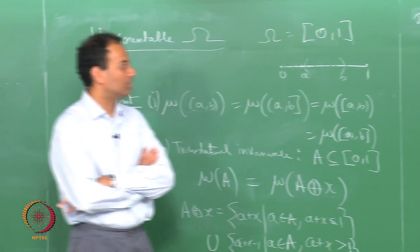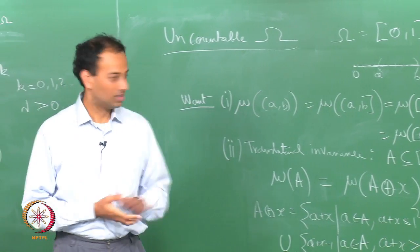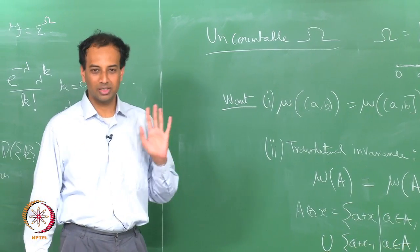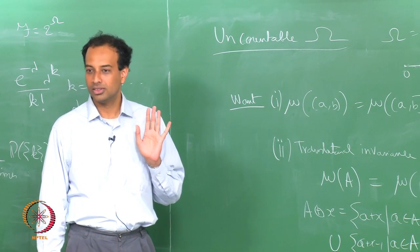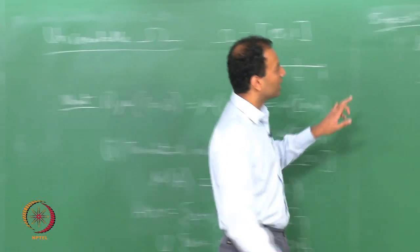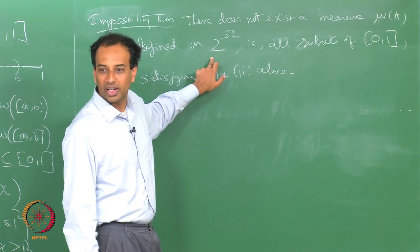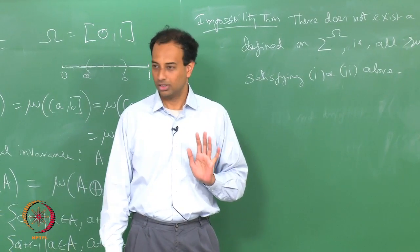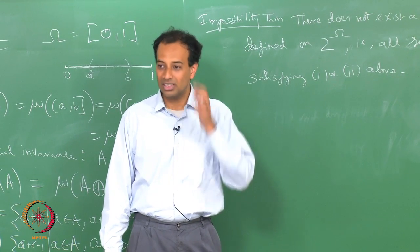There are other impossibility results as well — not just for the uniform measure, but for a large class of continuous measures which can never be defined on 2 power omega. All this means we have to compromise on the sigma algebra. We could very happily take 2 power omega as a sigma algebra for discrete probability spaces, but when omega is uncountable, 2 power omega is a luxury we cannot afford. So we have to work with a smaller sigma algebra, but still find a way of retaining subsets that are of interest to us.